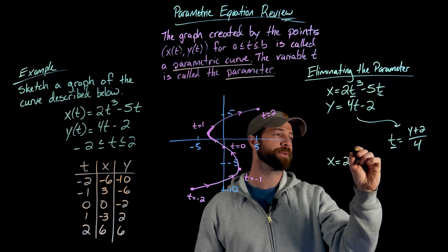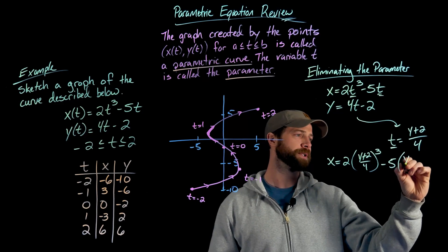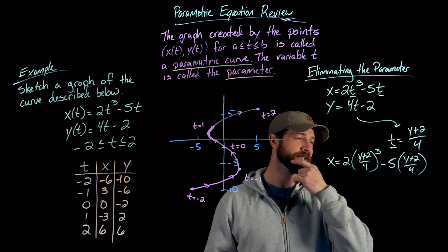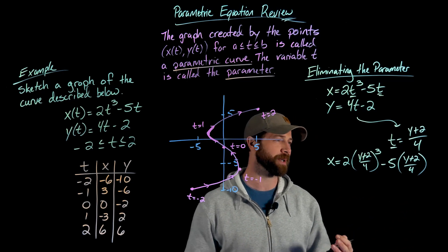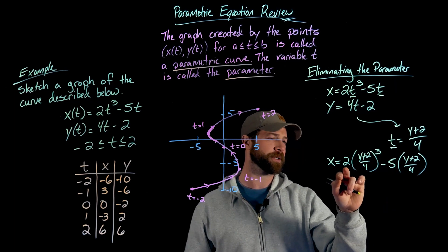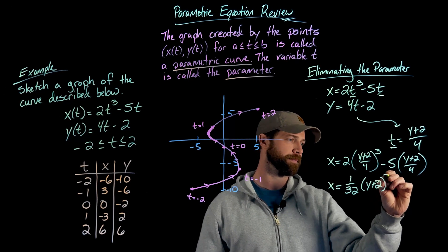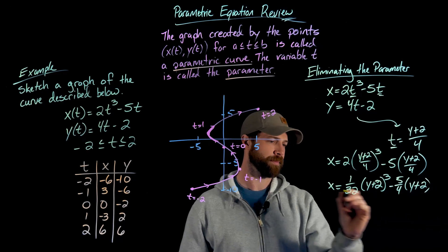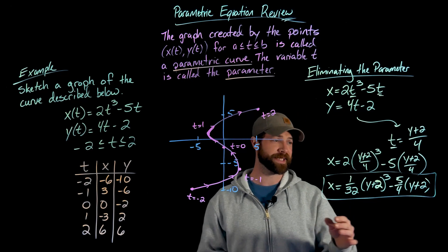That will give me x equals two times t, which is (y + 2)/4 cubed, minus five times t, which is (y + 2)/4. At this point I now have eliminated the parameter because I have an equation in terms of x and y. I could expand this—that would be (y + 2)³, which is going to get a big long expression, I'm not sure how much that would help. But what I will do is pull out these constants. This is 4³, which is 64. If I pull out that 64 I get x equals 1/32, and then I'll just leave this in parentheses, and the same thing here, minus 5/4 times (y + 2).